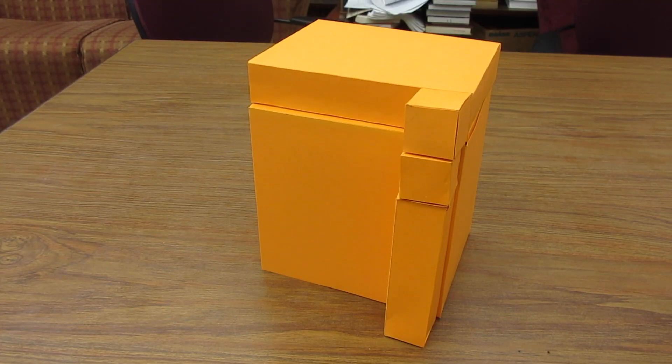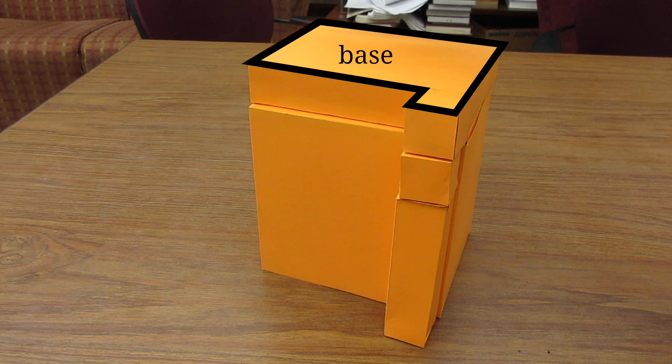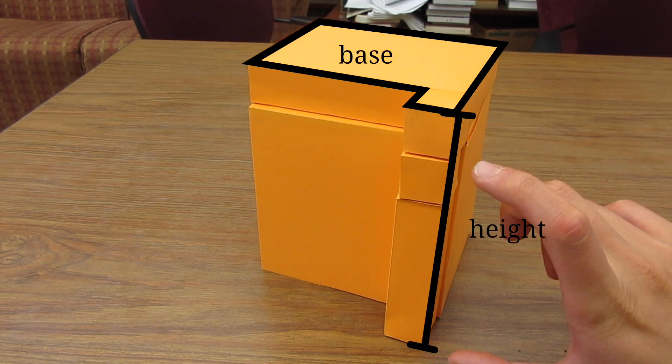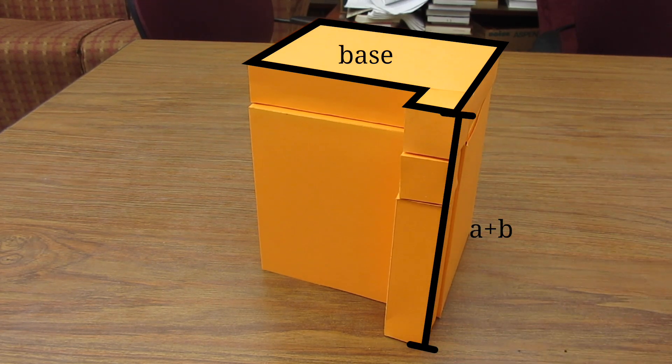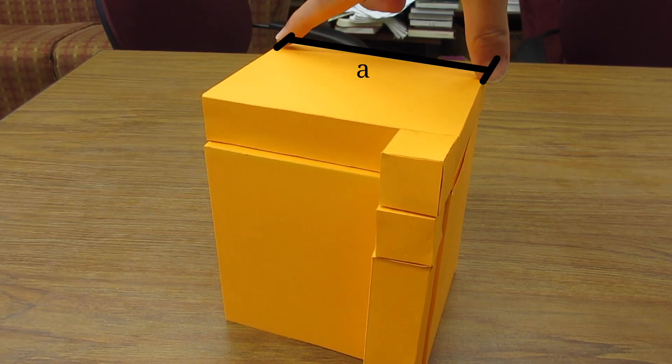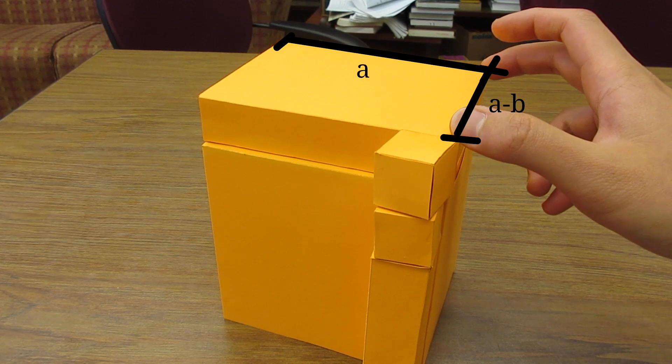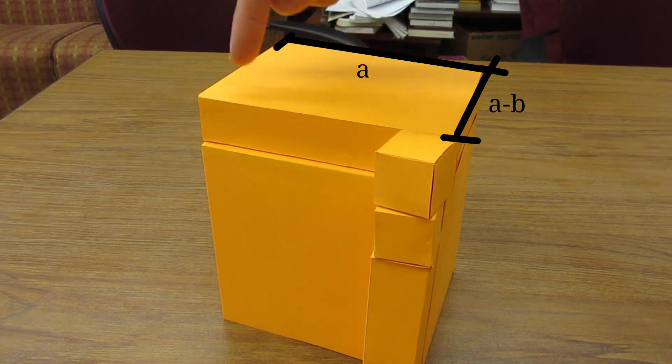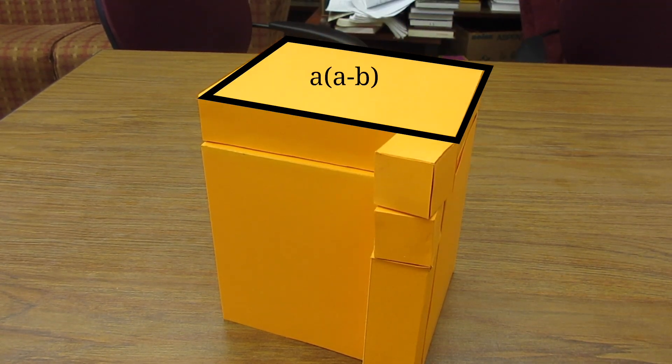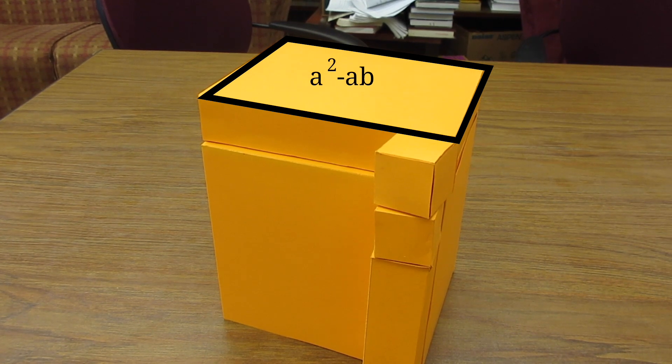Again, this is gonna be base times height. Base is gonna be this guy, height is gonna be this. Height this time is gonna be a + b. How about the base? This length right here is a, this length right here is a - b.